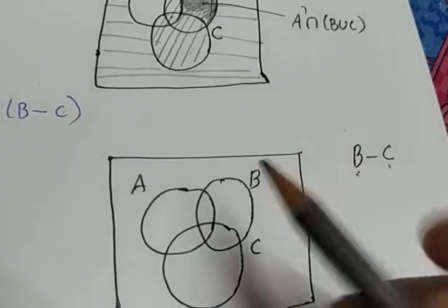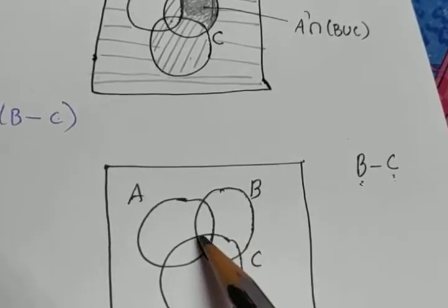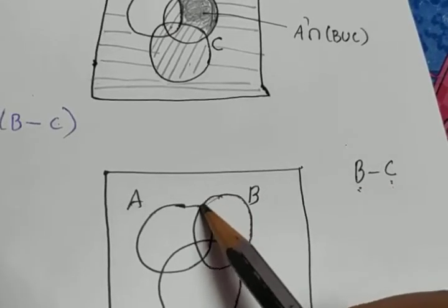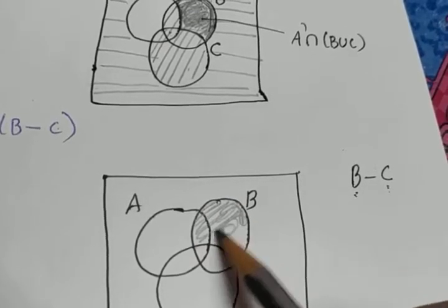So, if you want to represent in the Venn diagram, this is set B. And we have to avoid C. C means this much part of C. So, if I avoid C from B, this shaded region represents B minus C.